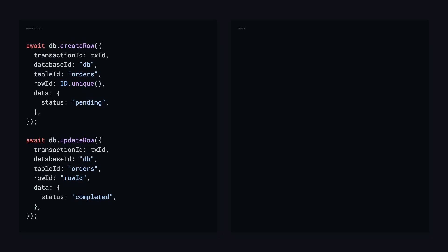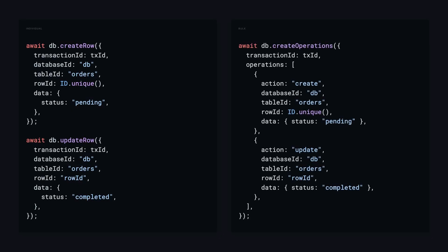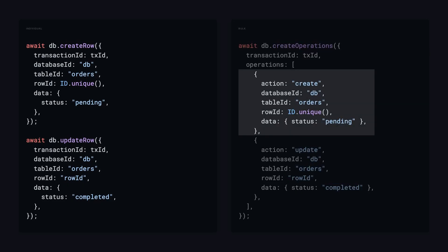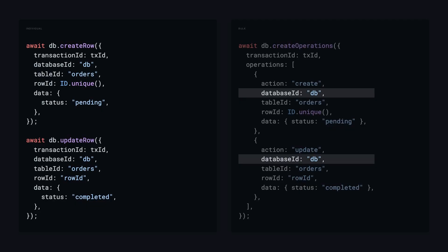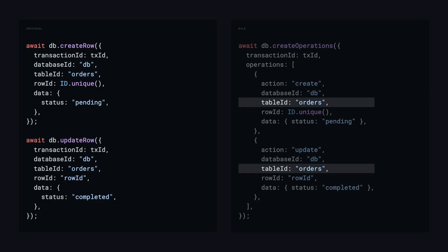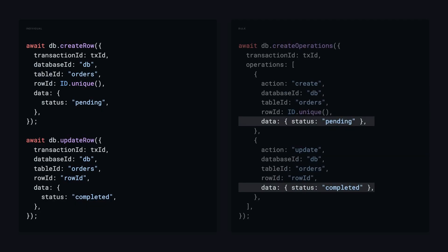The other way is to stage many operations at once using the create operations method. Instead of calling each method individually, we pass in the transaction ID and then every operation we want to perform as an array of objects. The action is the same — we include the create action, database ID, table ID, row ID, and the data — essentially grouping all the operations together.